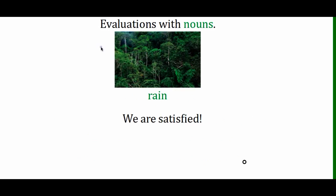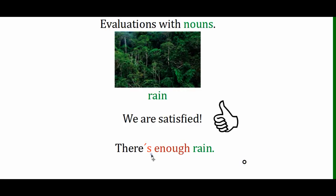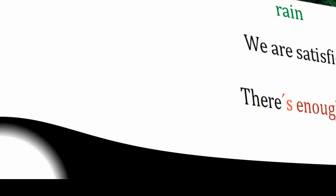The same goes with rain. This is a lovely rain forest — it's nice and green and we're satisfied. So we can say: 'There's enough rain.' And 'be', in the form of 'is', is not negative because we have the sufficient amount. 'There's enough rain' — it's perfect.